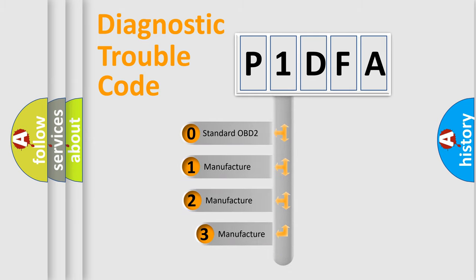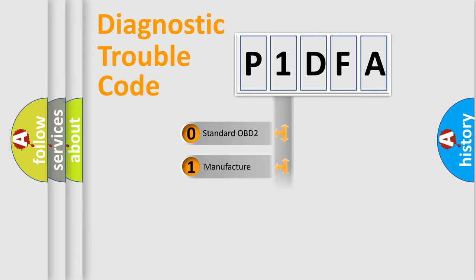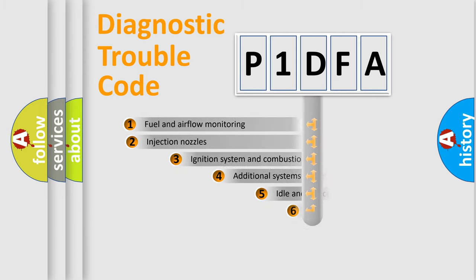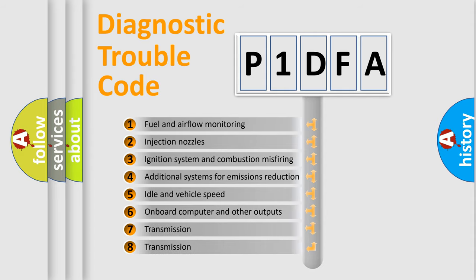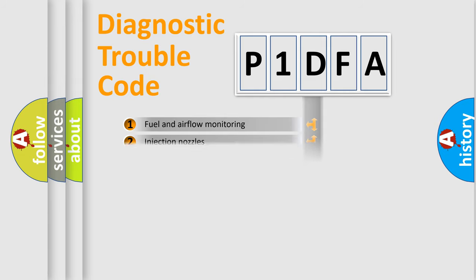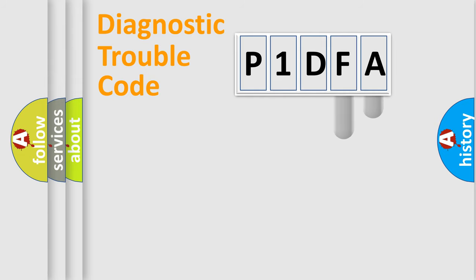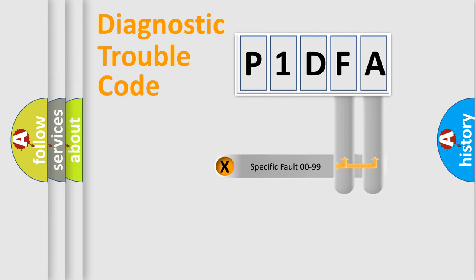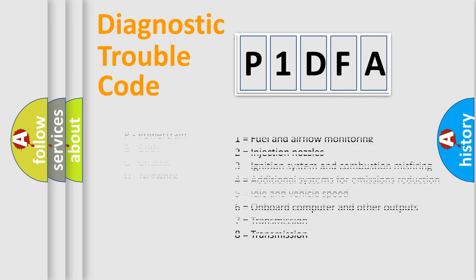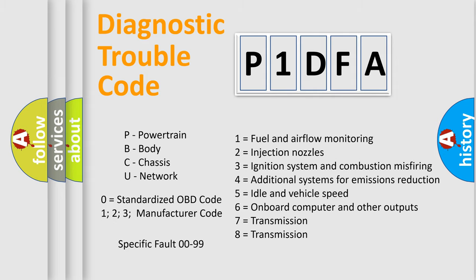If the second character is expressed as zero, it is a standardized error. In the case of numbers 1, 2, or 3, it is a manufacturer-specific expression of the error. The third character specifies a subset of errors. This distribution is valid only for the standardized DTC code, and only the last two characters define the specific fault of the group. This division is valid only when the second character is expressed by the number zero.